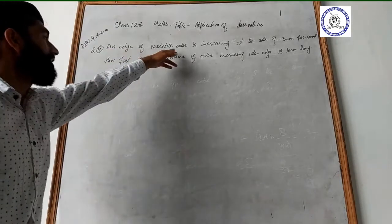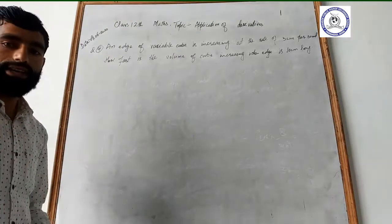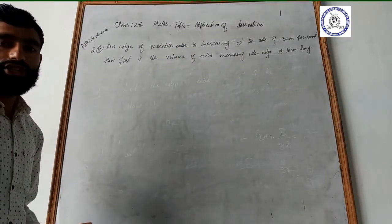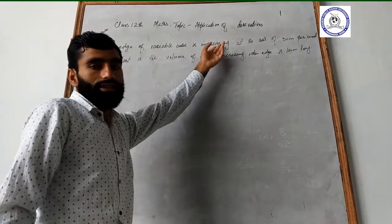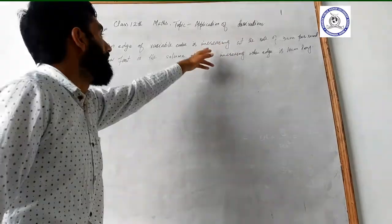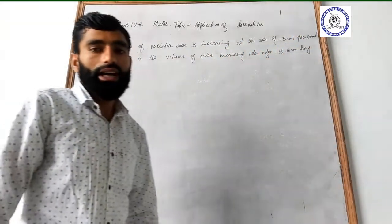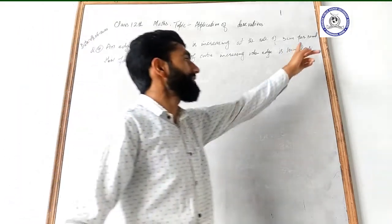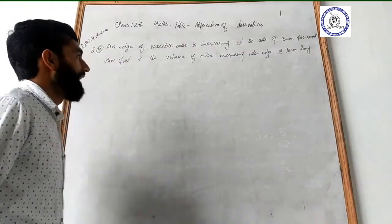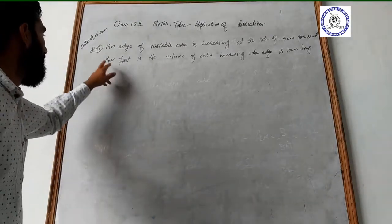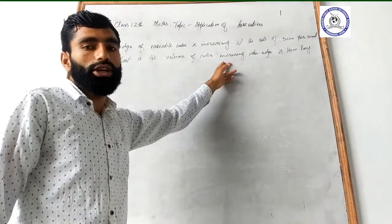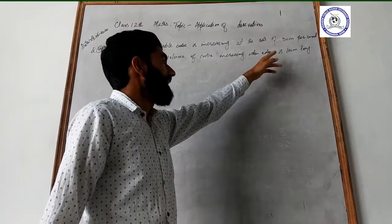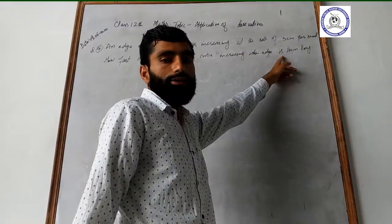Our next question: an edge of a variable cube is increasing at the rate of 3 cm per second. Every second, with respect to time, the edge is changing at the rate of 3 cm per second. How fast is the volume increasing when the edge is 10 cm long?